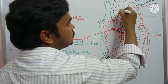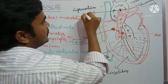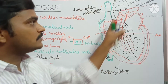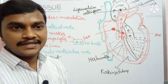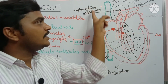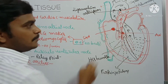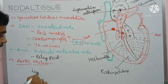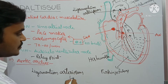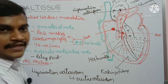The systemic arc and the pulmonary arch are connected by one fibrous cord called the ligamentum arteriosum. This is the remnant of the ductus arteriosum from the embryonic stage. In the embryonic condition it is called the ductus arteriosum, and after birth it becomes the ligamentum arteriosum. This is all about the internal structure of the heart. Thank you for watching.